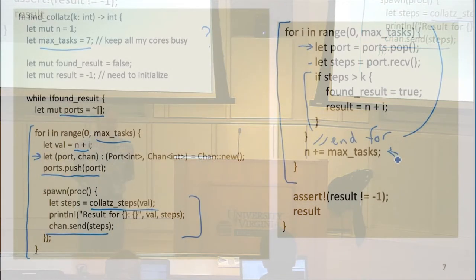So what are the things we should be worried about going wrong here? Remember, our goal is to get the number, the lowest number that has at least that number of, at least k steps in the Collatz sequence to get down to one. Does this guarantee that we always get the lowest one, or are we going to get the one that happens to finish first?